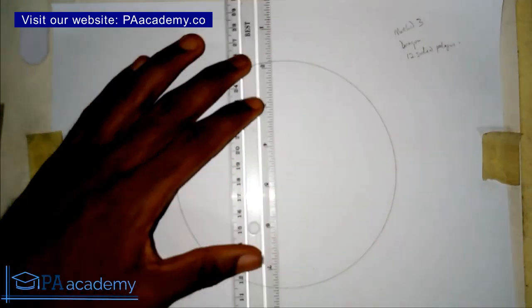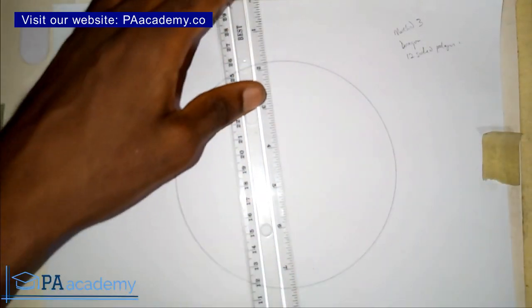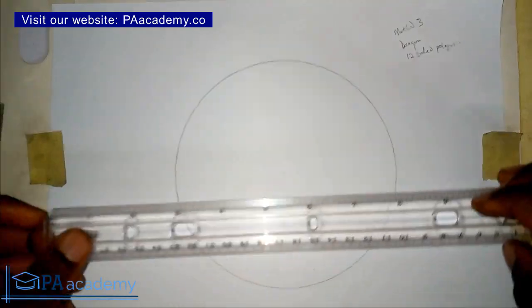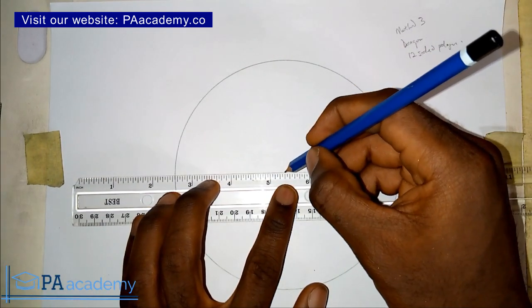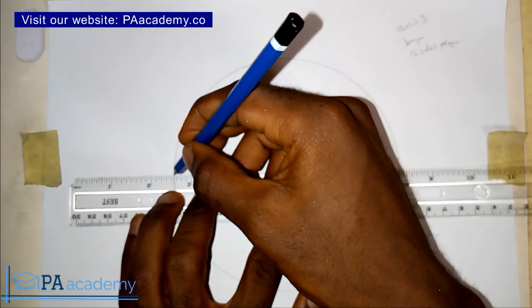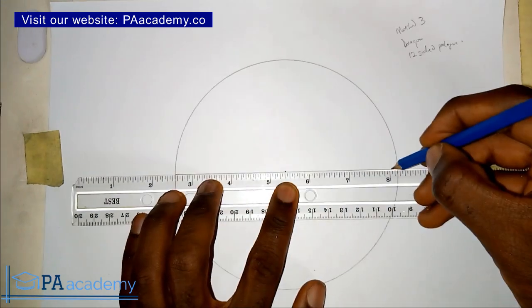Now after you draw your circle, the next thing you have to do is divide the circle into four equal parts. First, you are going to draw a diameter.